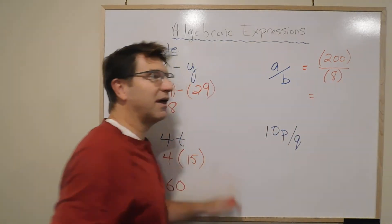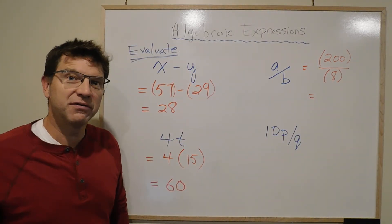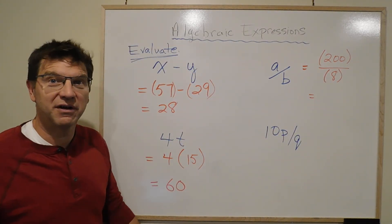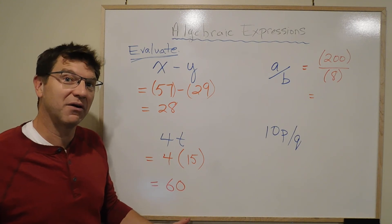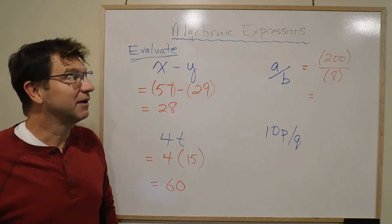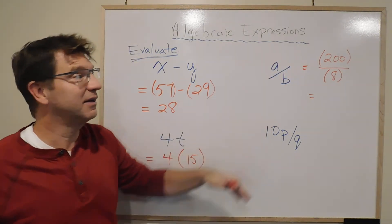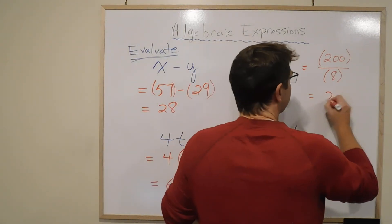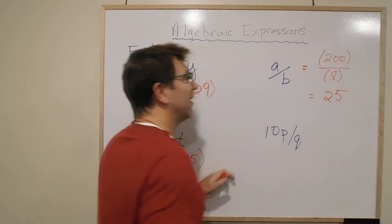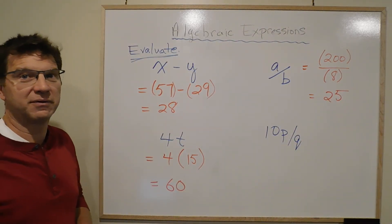So this is going to equal 200 over 8. Now, in this case, the brackets aren't useful at all, because it's division. It would be division whether the brackets are there or not. But we put them in to show that we're substituting. And then 200 divided by 8 is 25. And our answer is 25.